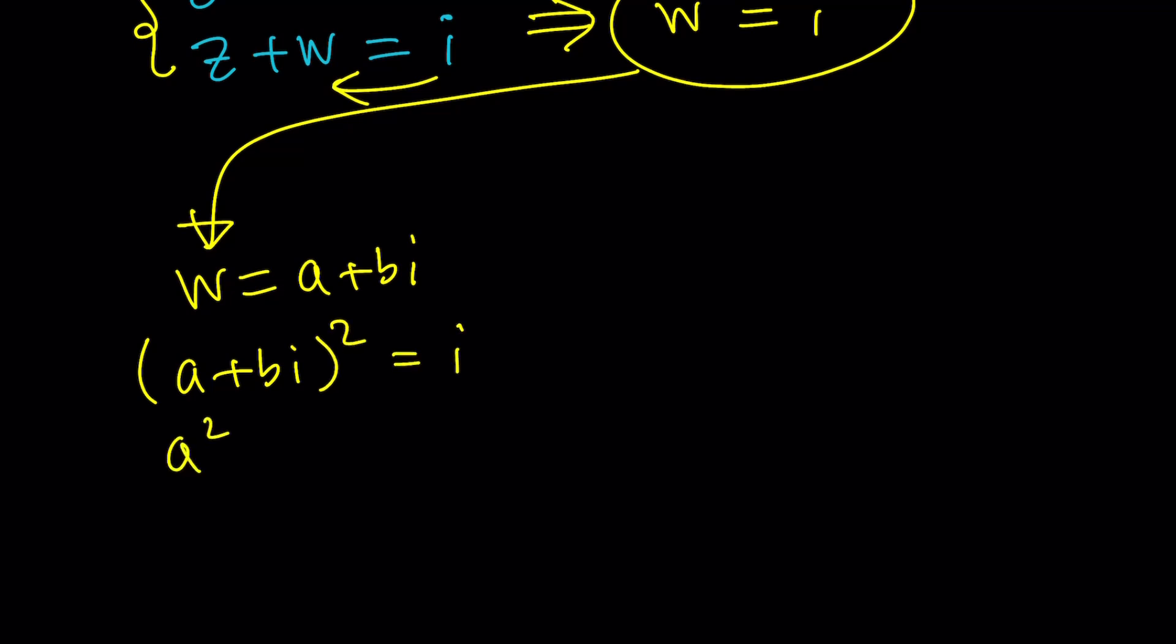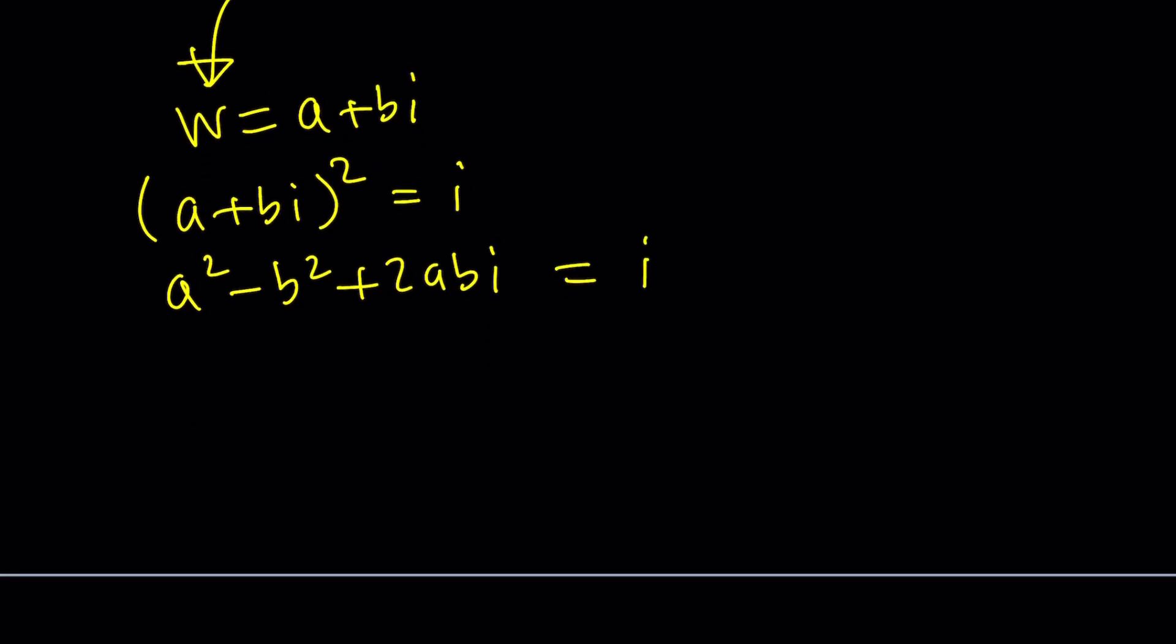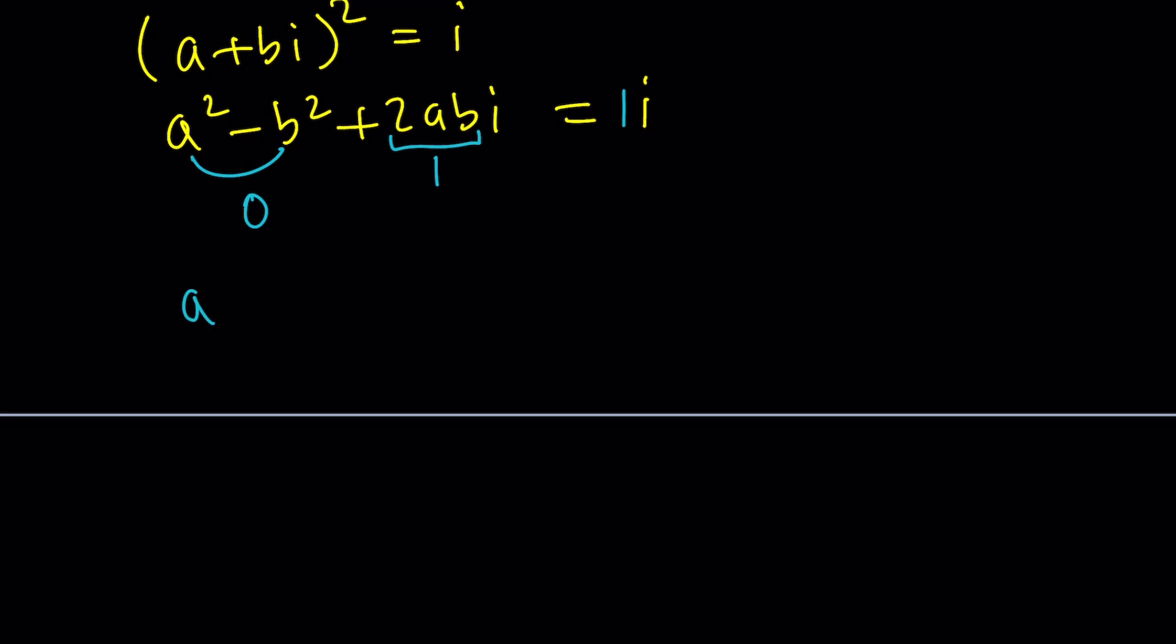From here, we get A squared minus B squared. Bi squared is basically minus B squared plus 2ABi equals i. Now, we're going to compare the real parts. There's no real part here. So that's zero. Nice. And the imaginary parts, this is supposed to be 1 because we have 1i here. You see that? Cool. Now, we get the following: A squared equals B squared and 2AB equals 1, which implies AB equals 1 half.